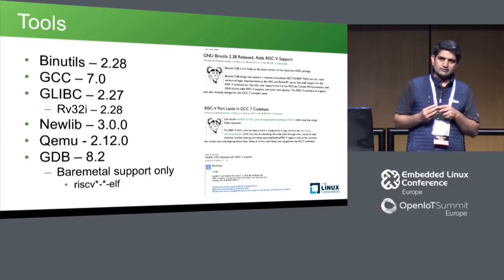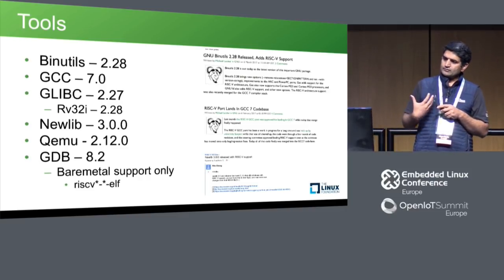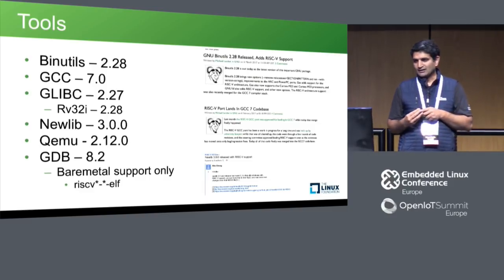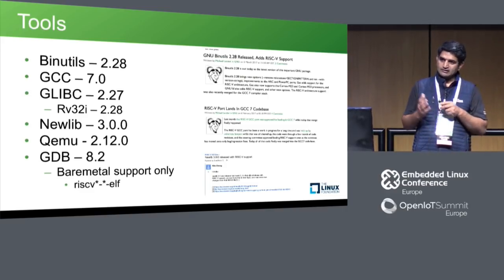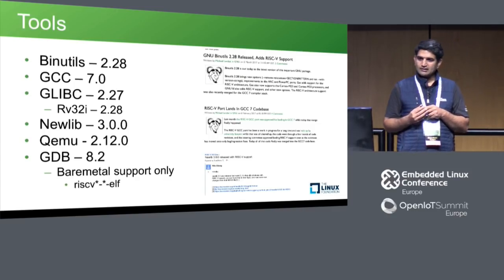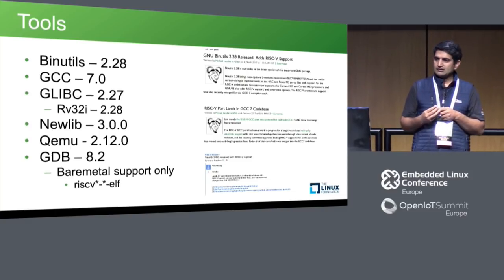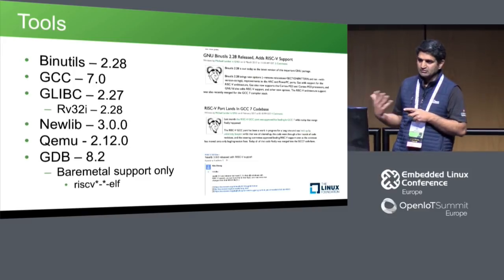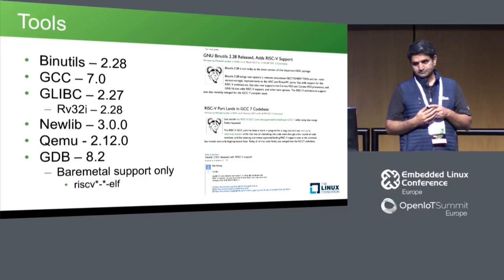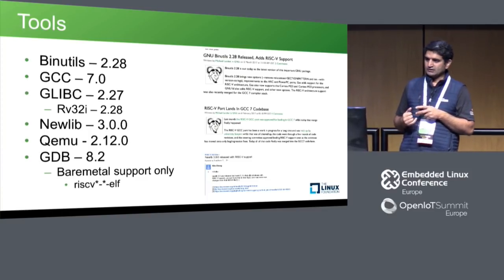The software is developing very fast for RISC-V, and what I'm going to talk about today may be obsolete tomorrow. The RISC-V community has taken the step of upstream first — a learning from other architecture ports — to make sure all basic support in tools and the kernel is upstream first. As a result, a lot of basic tool support has landed upstream. In binutils 2.28, we got RISC-V 64-bit support.